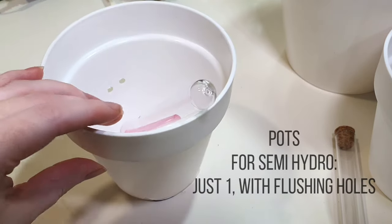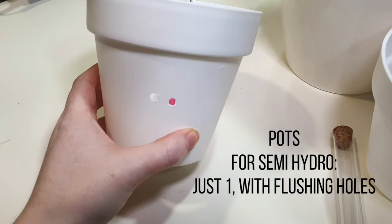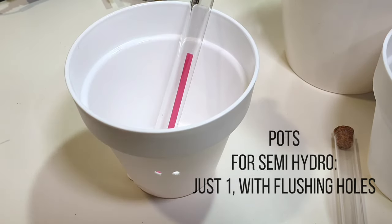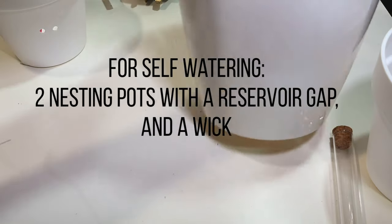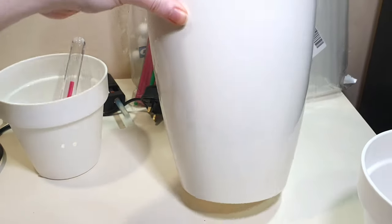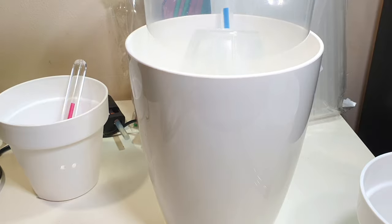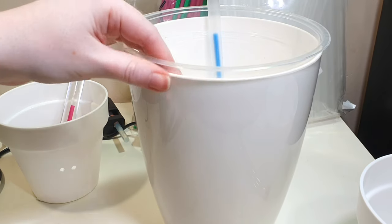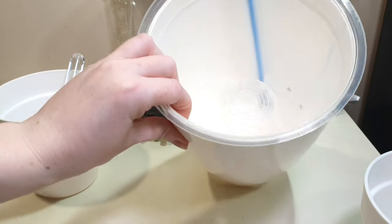You'll need some pots either for semi-hydro or self-watering. For self-watering you will need two different pots - one inner pot that fits inside an outer mask. The mask should have no holes in ideally because that way you won't have any reservoir spillage if you do overfill.